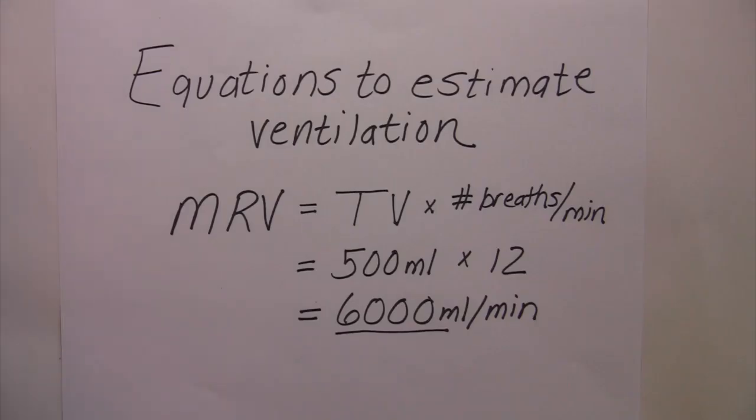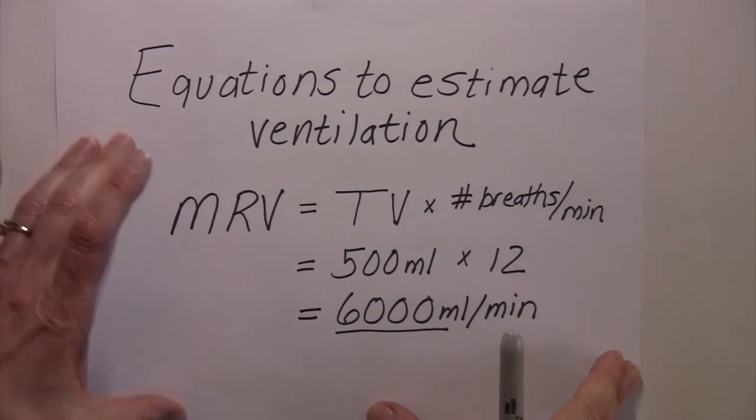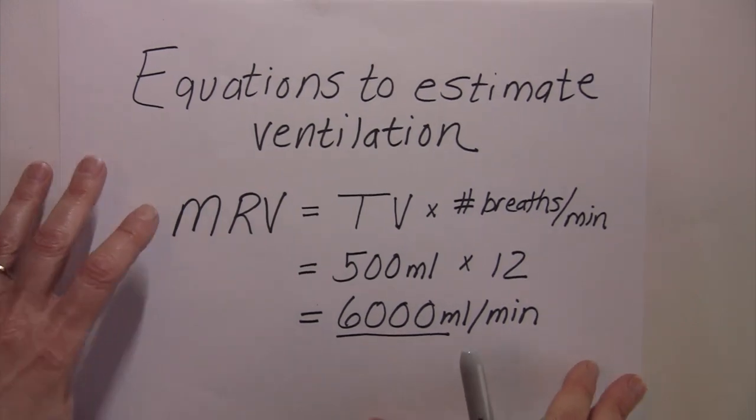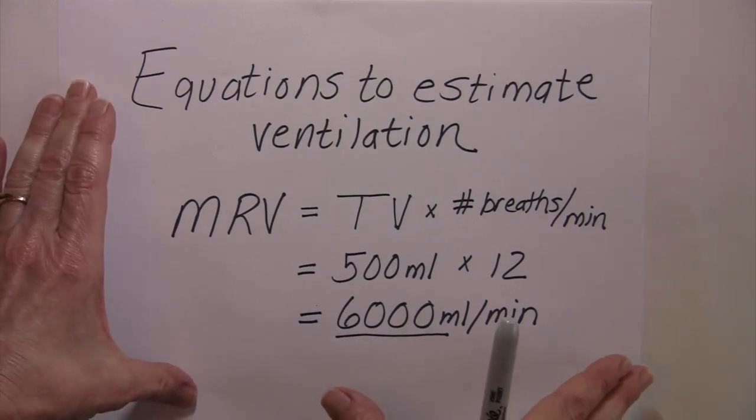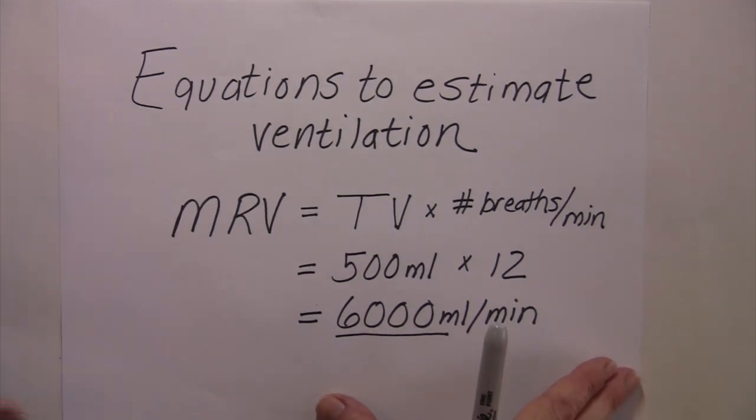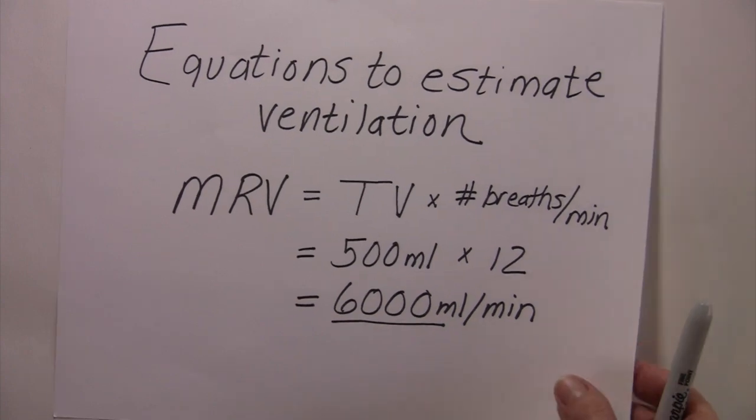Okay. Now that we know what the minute respiratory volume is, it's the amount of new atmospheric air that we're bringing into the airway per minute. And we understand what dead space is. We could calculate the alveolar ventilation rate, which would be similar to this, except you correct it for dead space and look at how much air is participating in gas exchange.